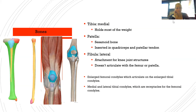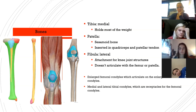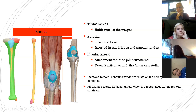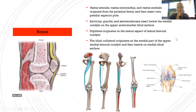The enlarged femoral condyles articulate on the enlarged tibial condyles. We also have medial and lateral tibial condyles, which act as receptacles that hold the femoral condyles. The vastus lateralis, vastus intermedius, and vastus medialis originate from the proximal femur and insert onto the superior pole of the patella.